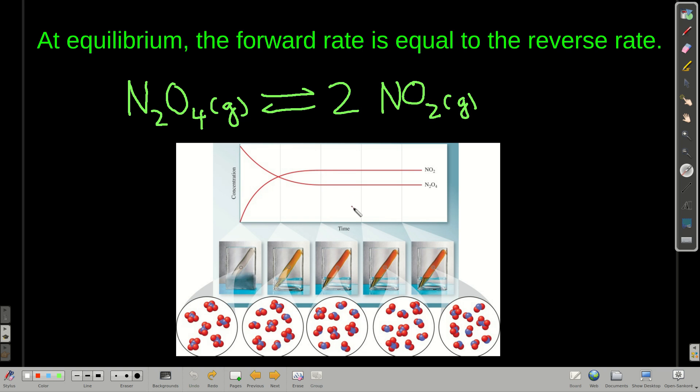What we mean by equilibrium is where the rate of this forward reaction is equal to the rate of the reverse reaction. When that's true, then the concentrations of the species present stay the same. The equilibrium concentrations don't change. However, this is a dynamic equilibrium.